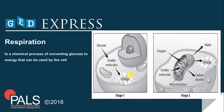What about respiration? Respiration is a chemical process of converting glucose to energy that can be used by the cell. Respiration occurs in two stages as shown in the diagram on the slide. First, glucose from food enters the cell and is broken down into smaller molecules. This process releases a small amount of energy for the cell to use.